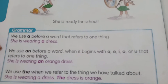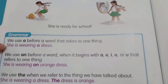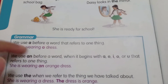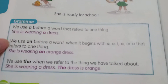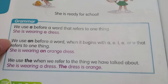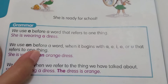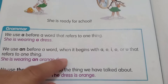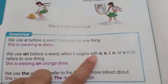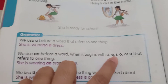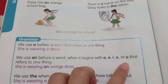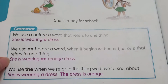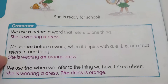We use 'a' before a word that refers to one thing. For example: she is wearing a dress — it's only one thing. And then we use 'an' before a word when it begins with a, e, i, o, or u, that refers to one thing.